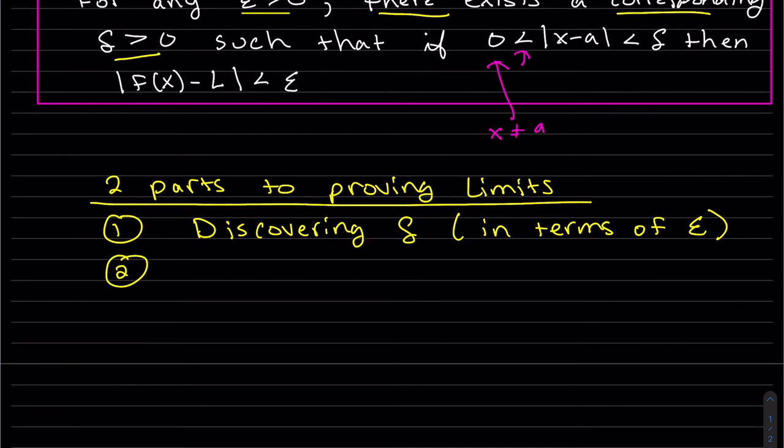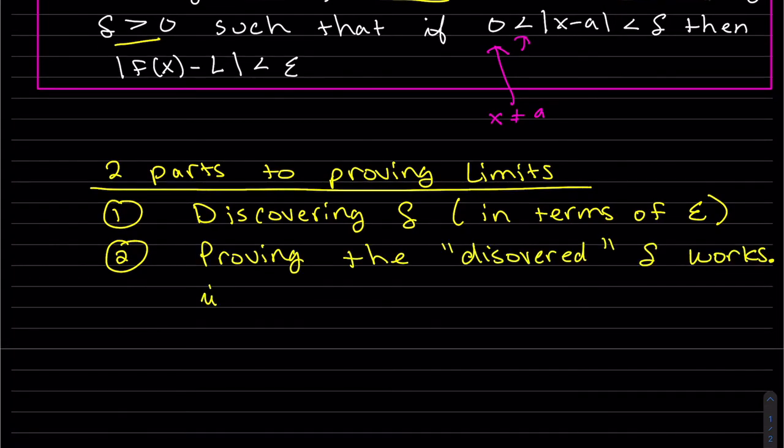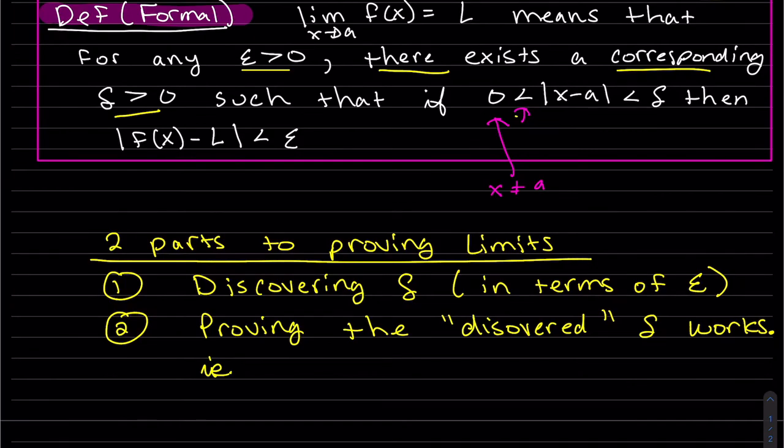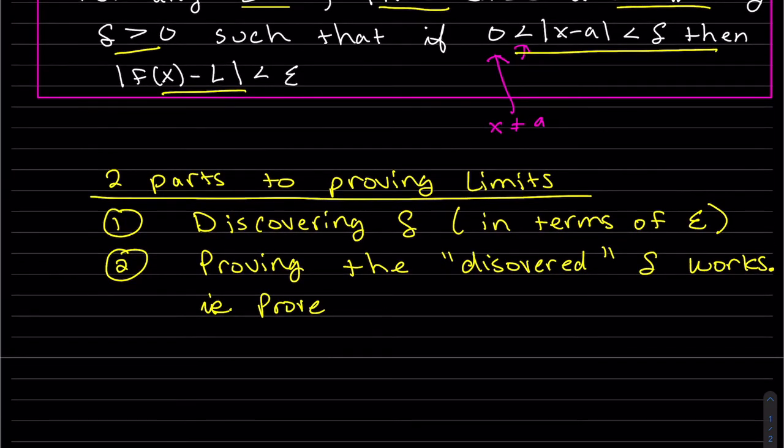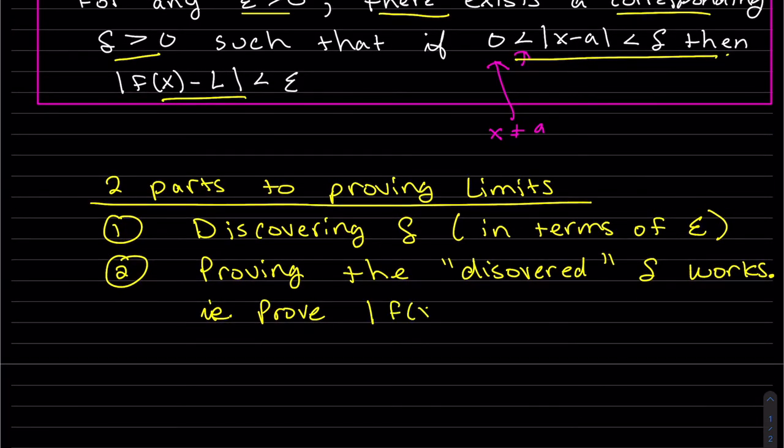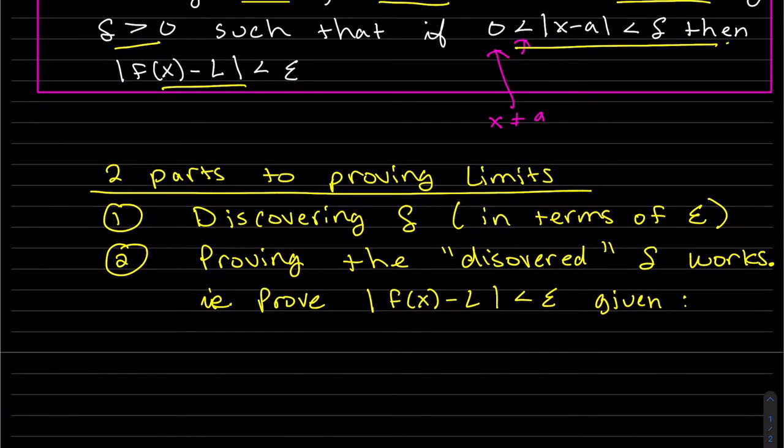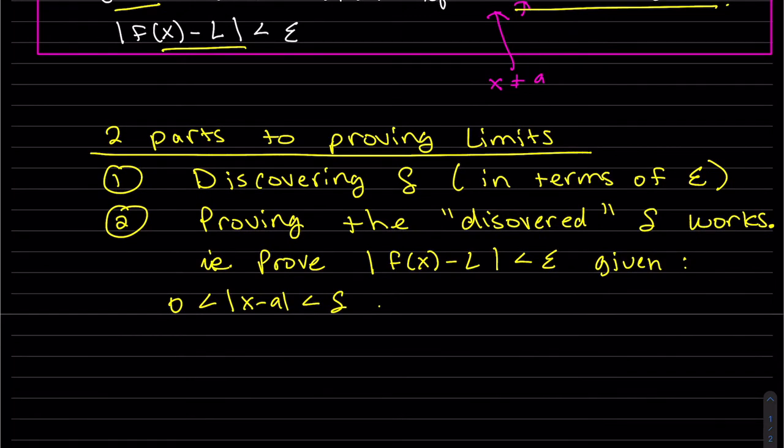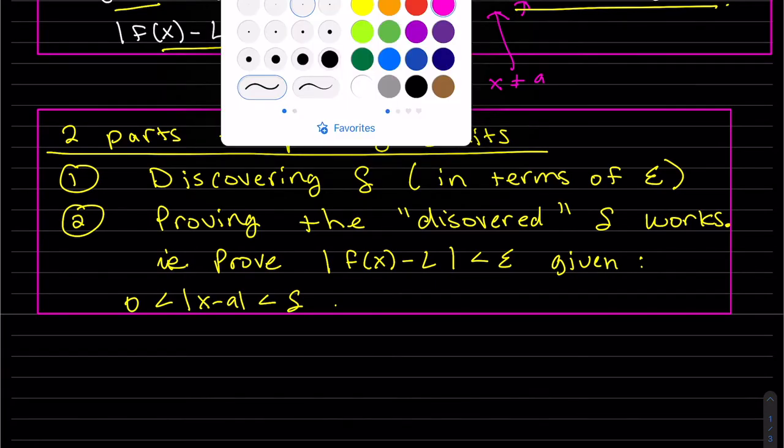Then the second part is proving the discovery works, i.e., we're proving the second part of this proof, this one right here. You want to prove |f(x) - L| < ε, given the first part, given that that distance is less than delta.